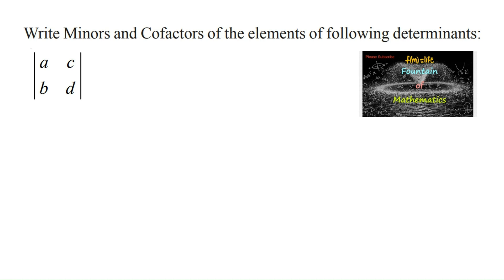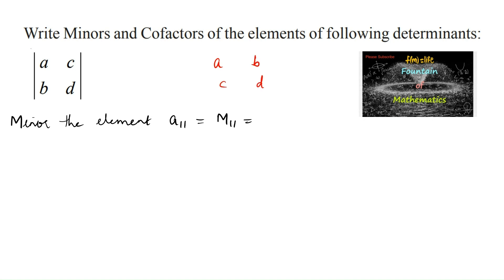We know that the minor of the first element. At position A11, M11 is equal to — deleting its particular row and its particular column for the element A, we are left with only one element, D. So the determinant of the single element is also D. So, I can write the minor of the first element, M11, is D.